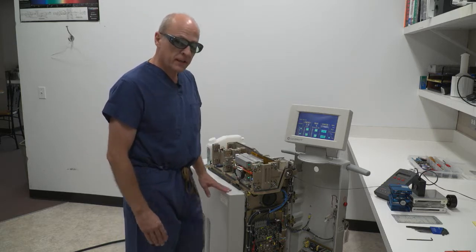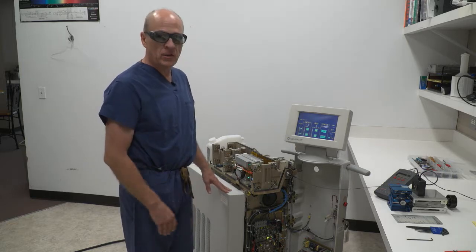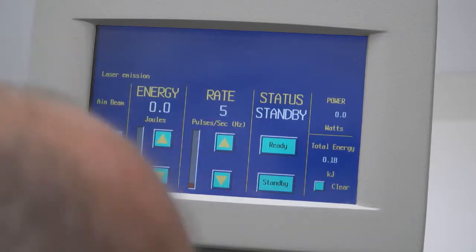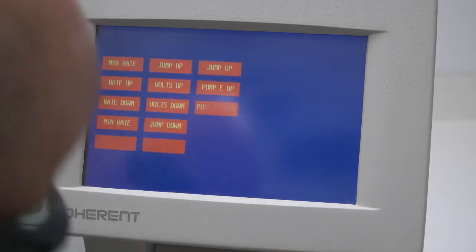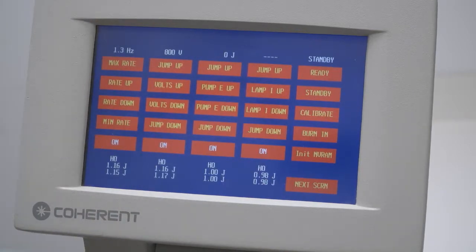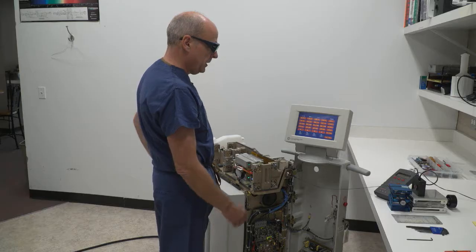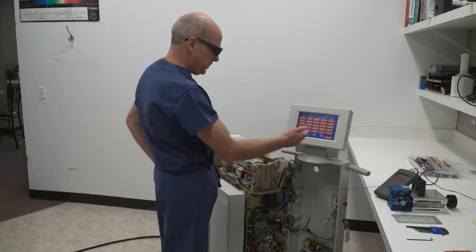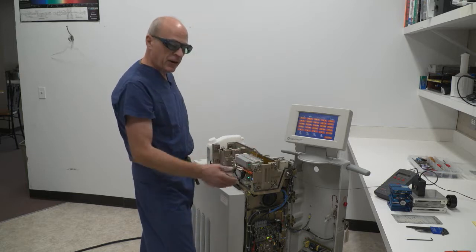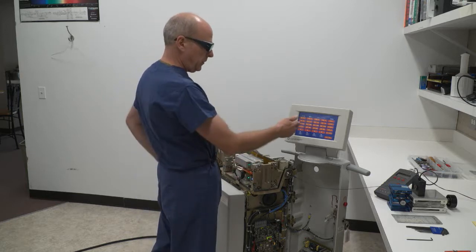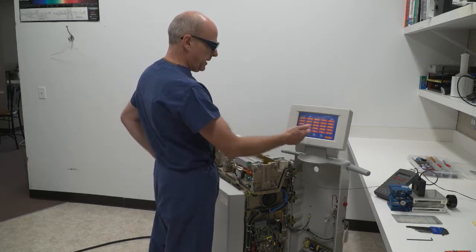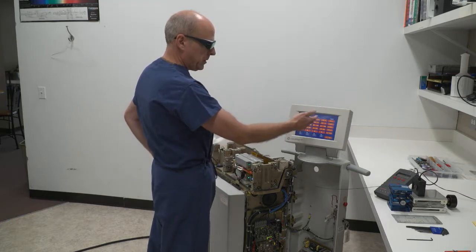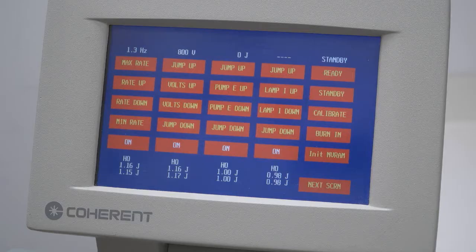But what I'd like to do instead is go into the service mode and take a look at some of the parameters of the laser. I have various screens that tell me a lot of information about how the laser is running. The first screen allows me to turn any given brick on and off to work on it and tells me the condition of the brick if I put a certain amount of energy or rep rate into that brick.